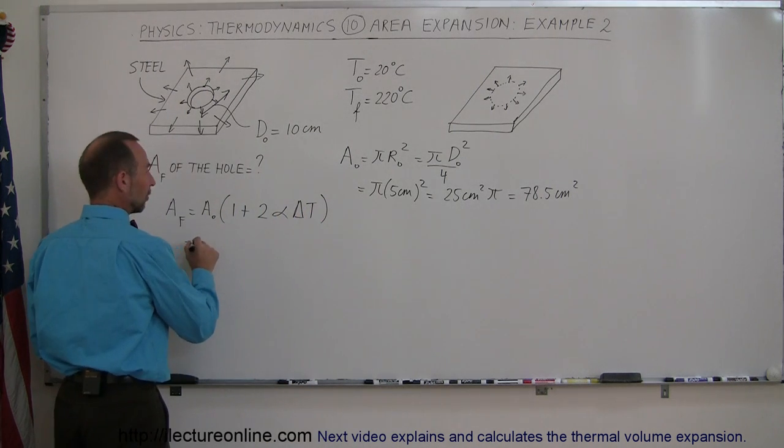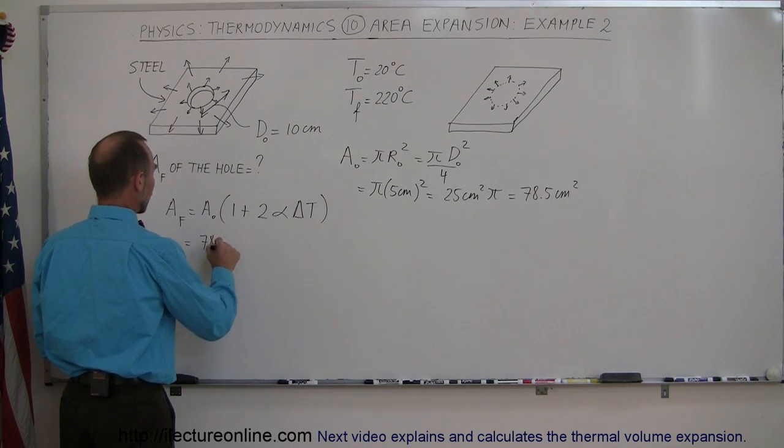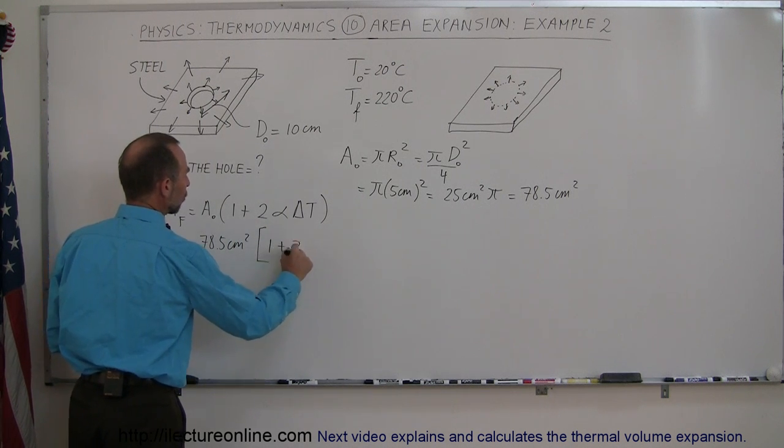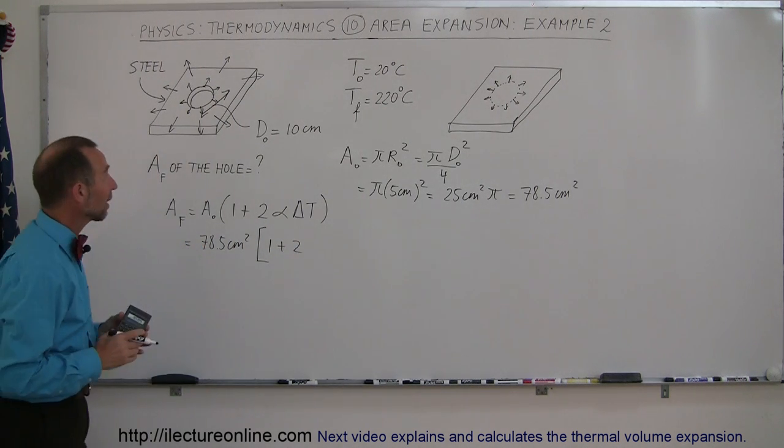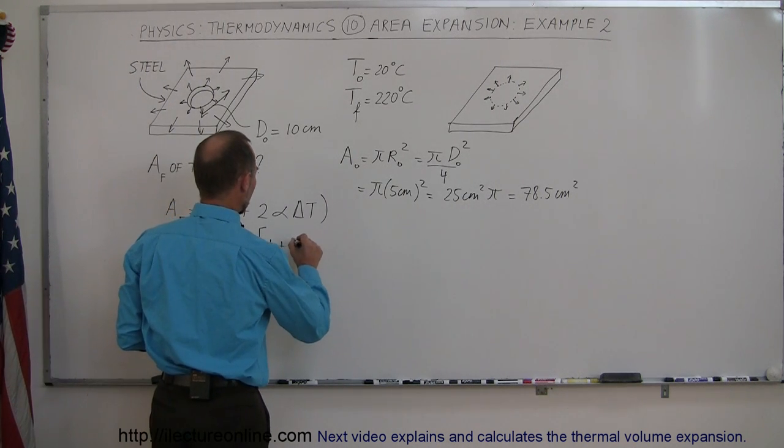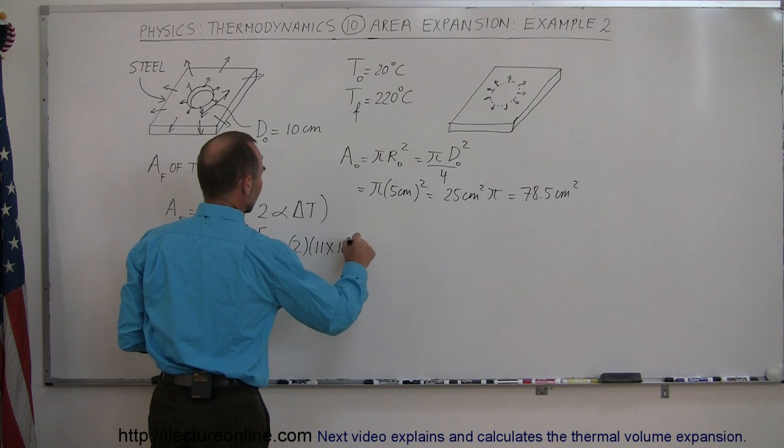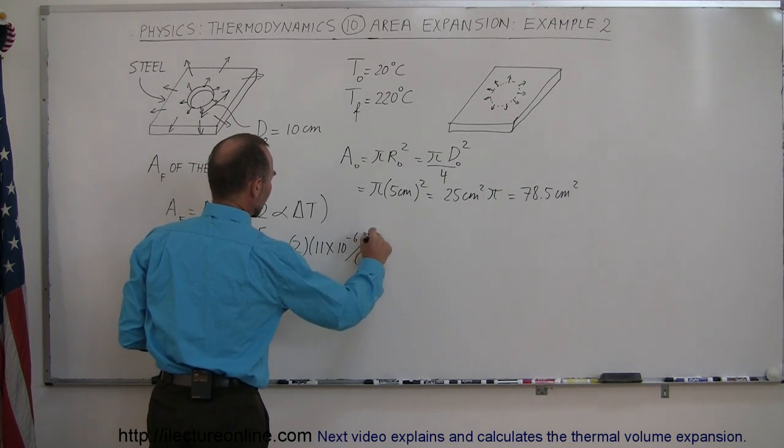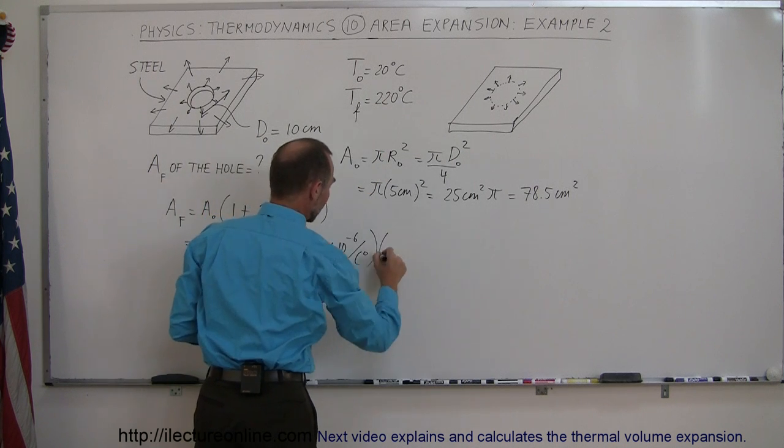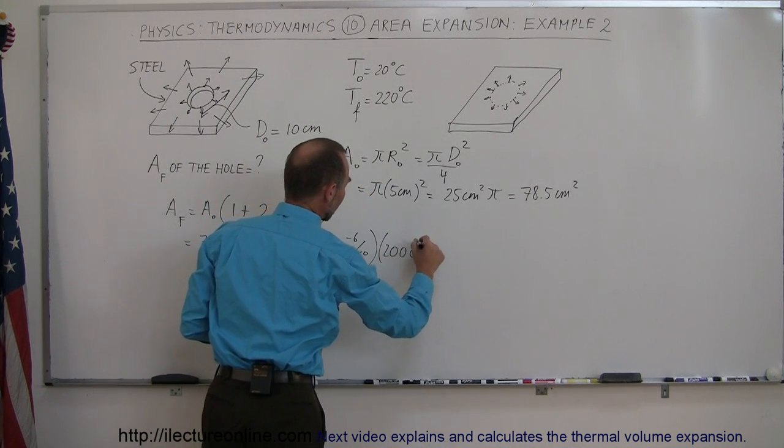Let's go ahead and plug that in here. So this is equal to 78.5 centimeters squared times one plus two times the linear coefficient of expansion for steel, that would be 11. So that would be two times 11 times 10 to the minus 6 per centigrade degree, and then times the change in temperature. You can see here that would be 200 degrees, so times 200 centigrade degrees.